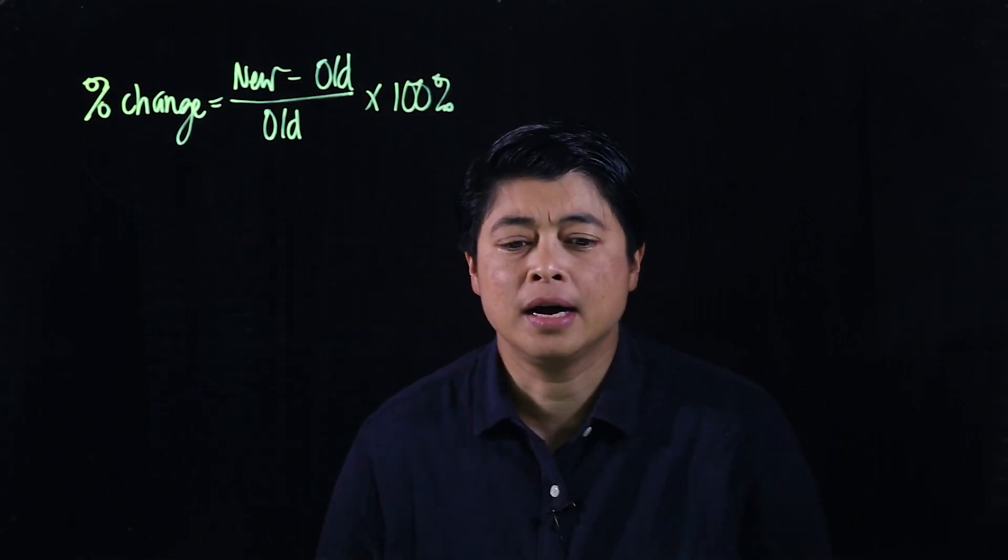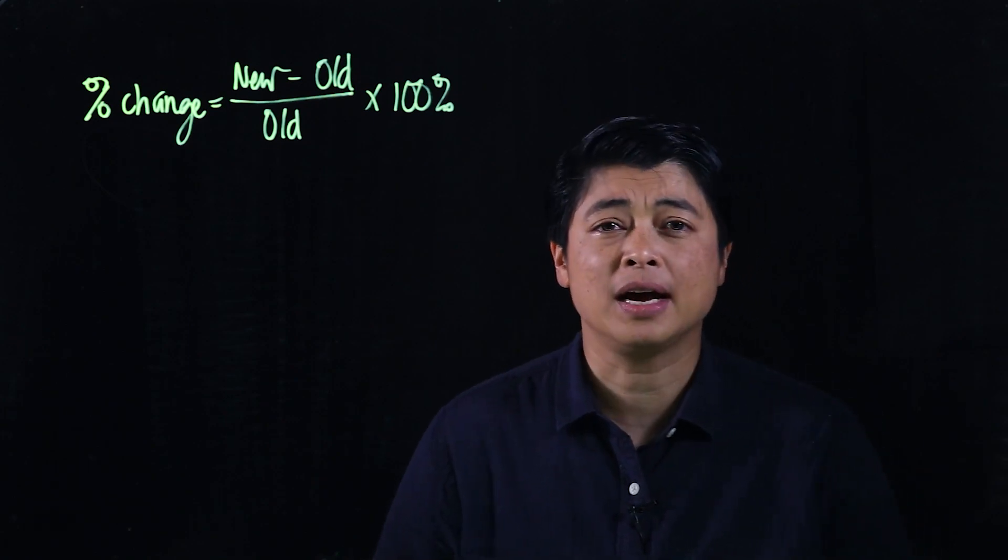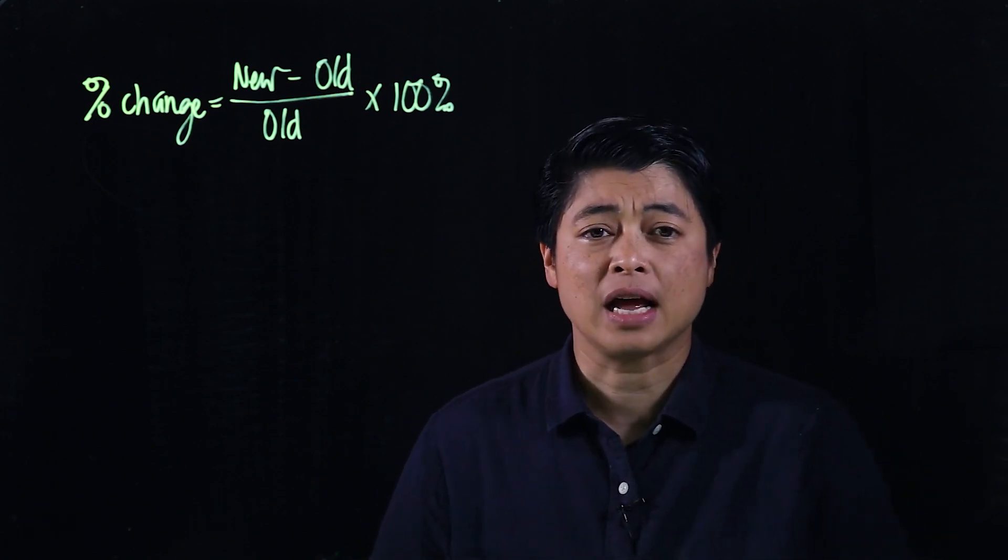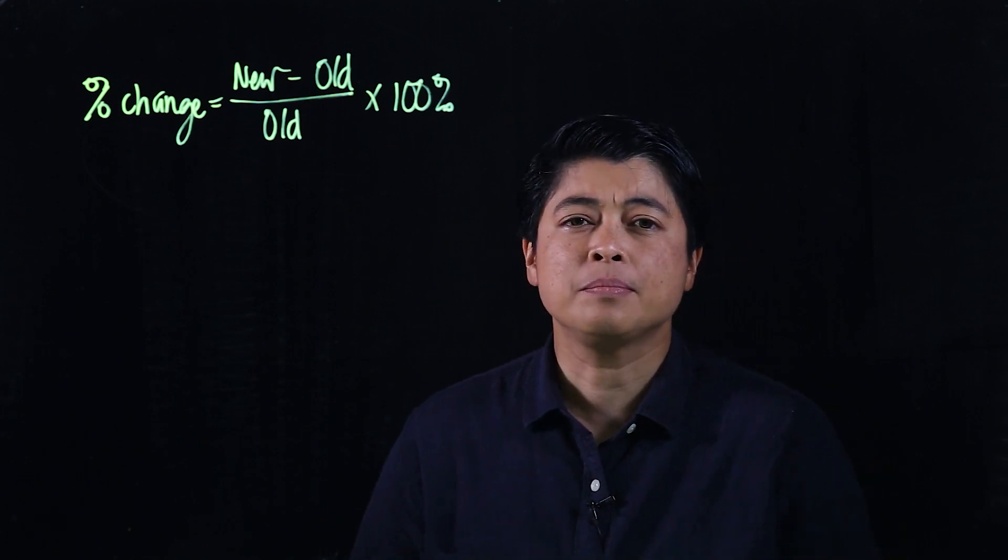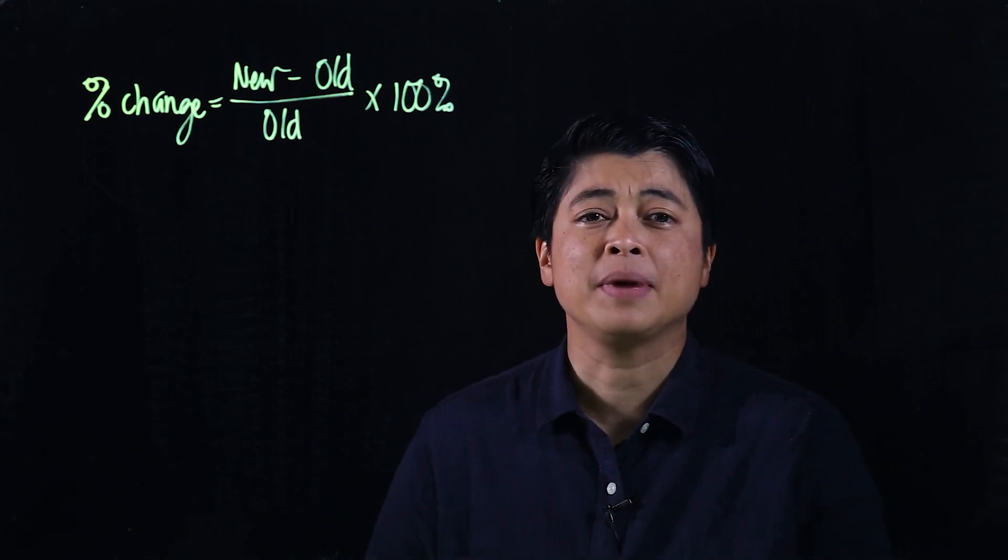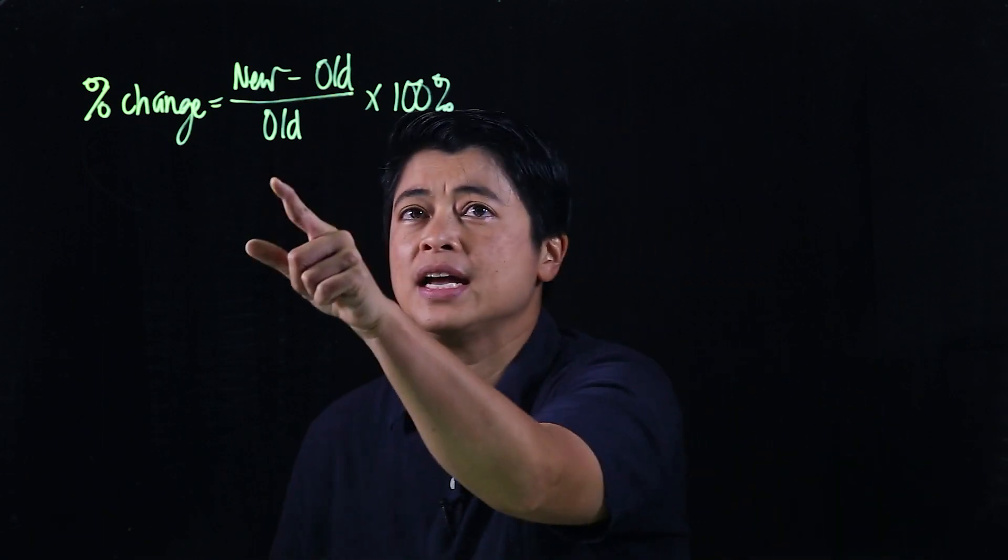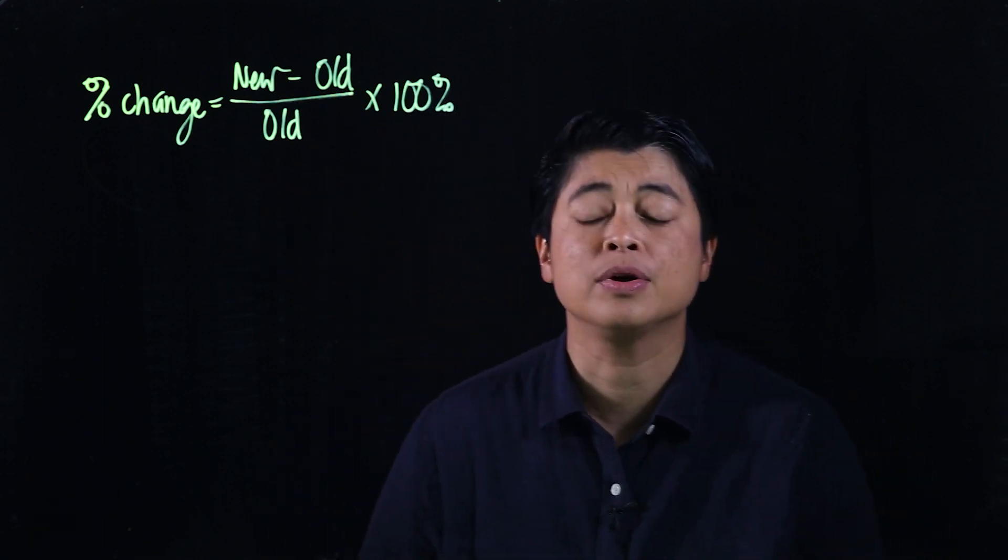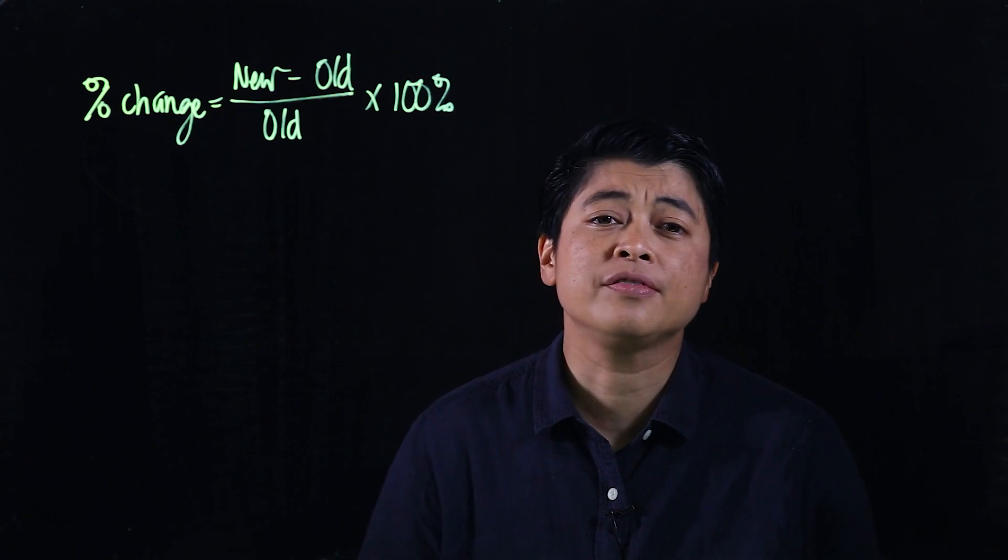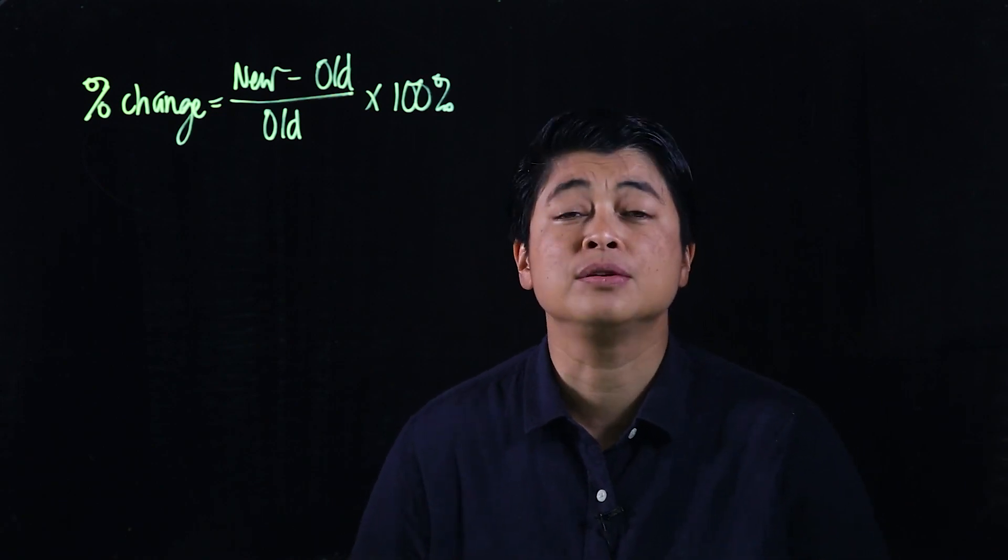Okay, so if we use this formula and we're allowed to use a calculator, it's much faster. But the way the book does it is it does it step by step. It'll first look for the difference and then it'll divide before you multiply by 100. So whatever you're comfortable with, that's what you want to do.